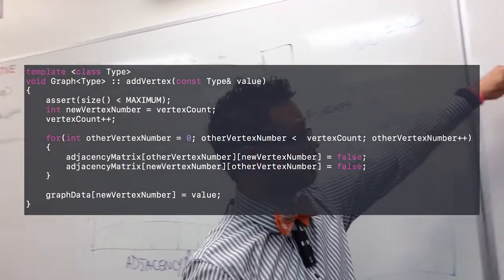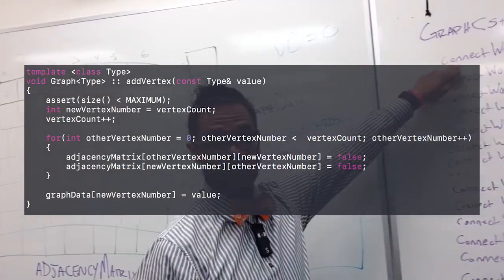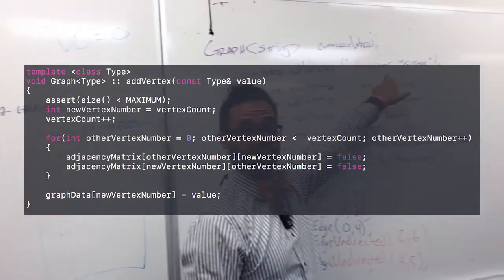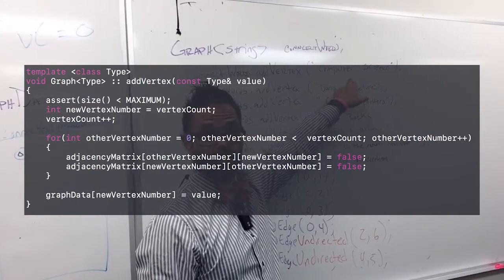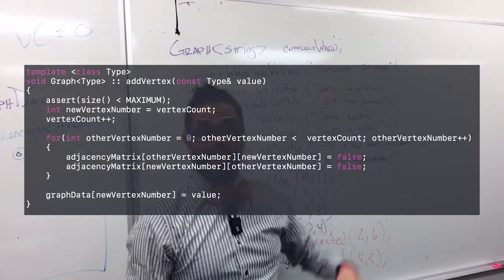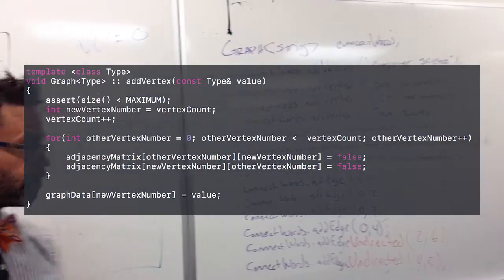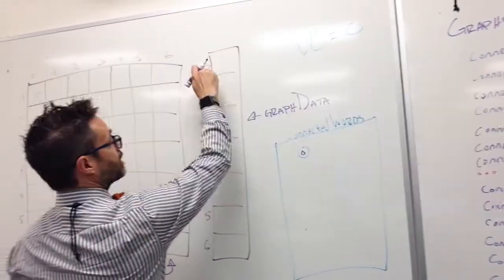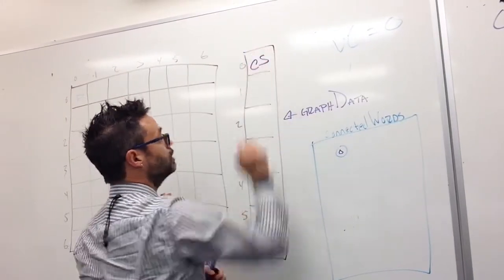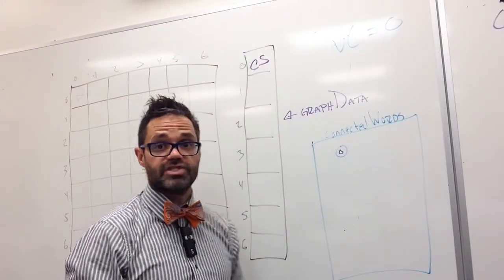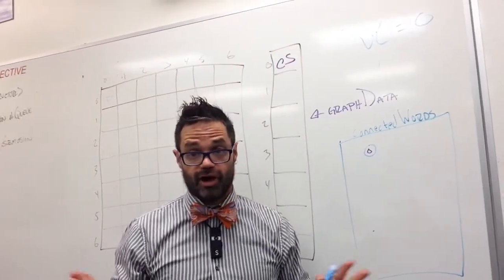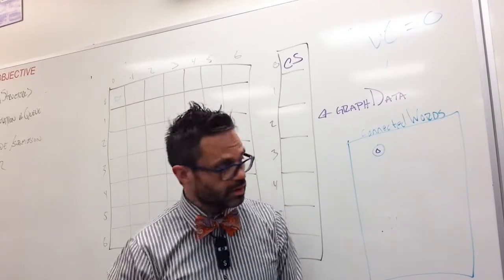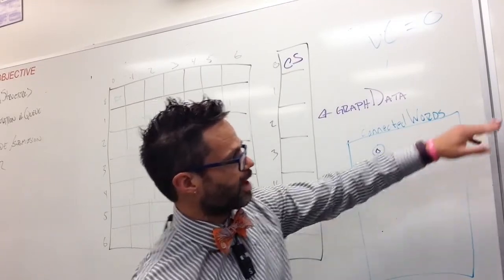My next step is to actually add my vertex — the data that's stored inside it. In this case, we have computer science. So that computer science string needs to be added to our graph data array. We're going to go over here to our graph data array, and in spot zero, we're going to type in CS. We have CS inside our graph data array. That's our first step.